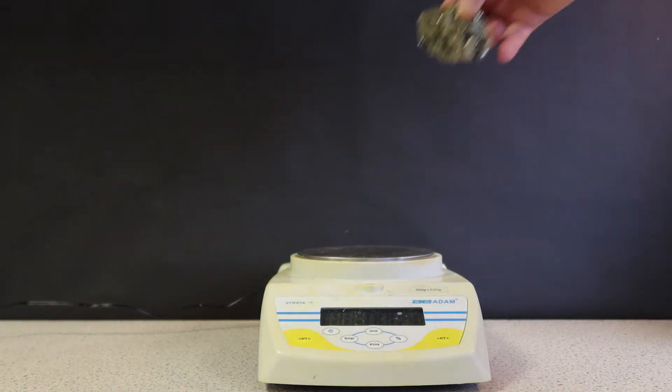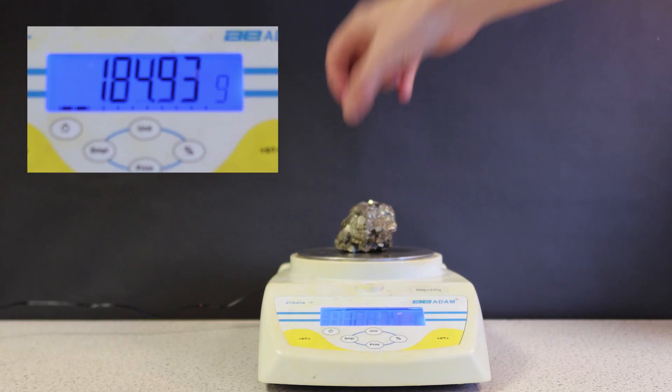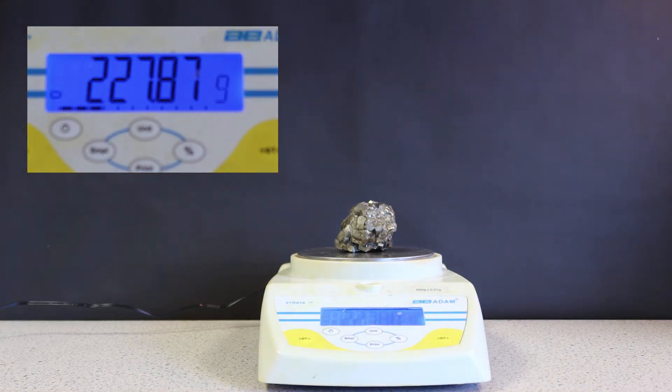To work out the mass we simply measure it using a balance. Placing the dry object onto the mass gives us a mass of 228 grams.